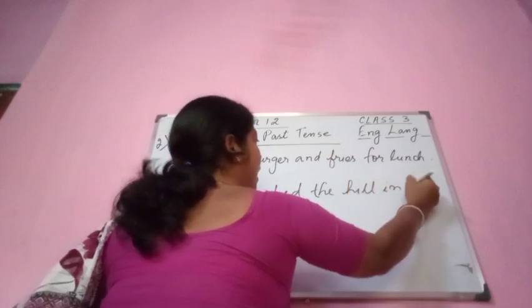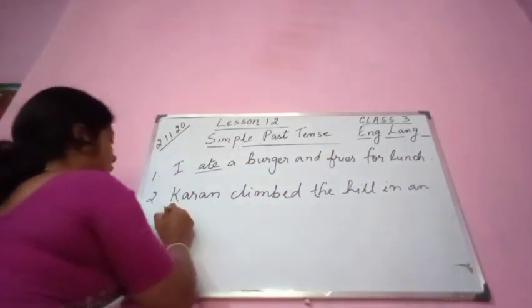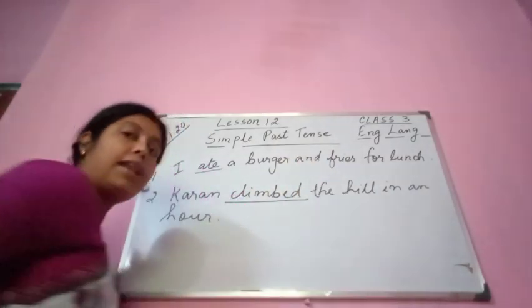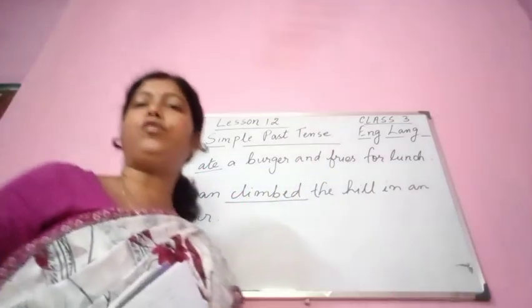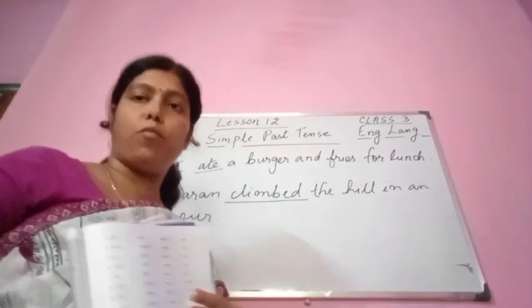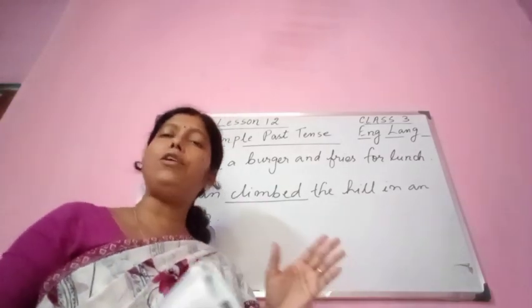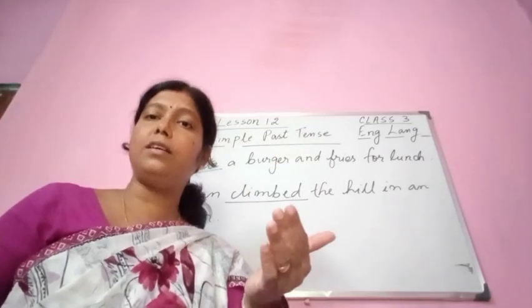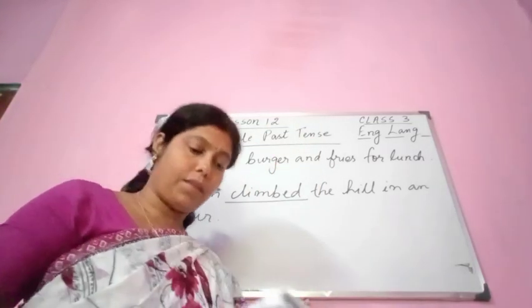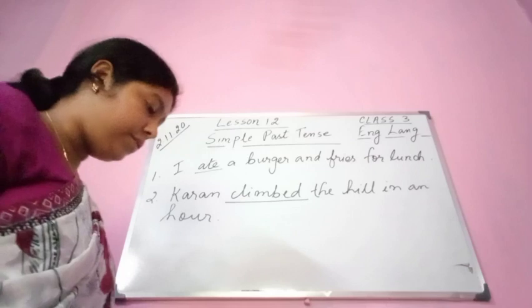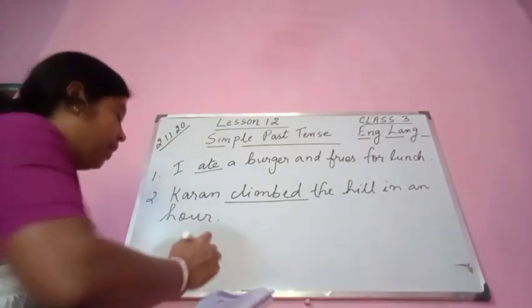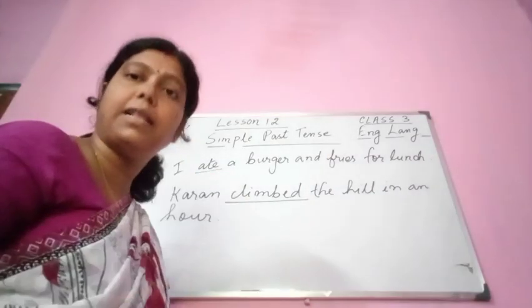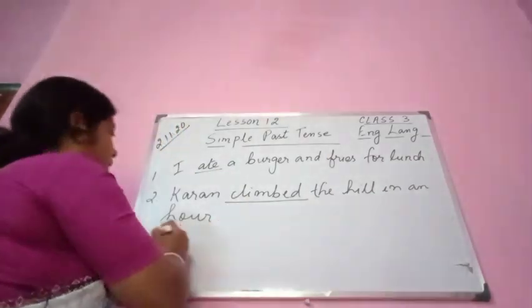You see the verb 'climbed' — afterwards I am going to teach you the structure or the formula of simple past tense. Now you understand that any action which happened in the past is known as past tense. With the help of the verb we can understand whether a sentence is in the past tense.